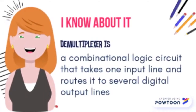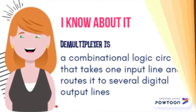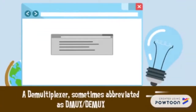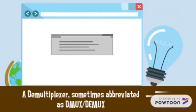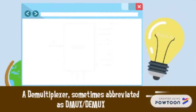A demultiplexer is also a combinational logic circuit that takes one input line and routes it to several digital output lines. A demultiplexer is sometimes abbreviated as demux.